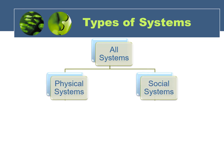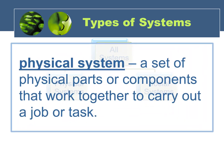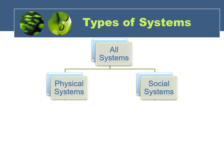Let's talk about physical systems first. A physical system is a set of physical parts or components that work together to carry out a job or task. In other words, physical systems are made up of parts that we can touch, see, or measure in some way, and they all work together to do a particular job.